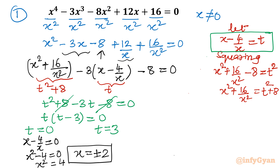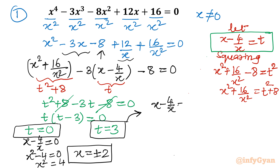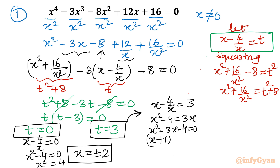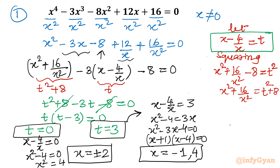From t equals 0 we get two solutions. Now solving t equals 3: substituting x minus 4 over x equals 3 and multiplying by x gives x squared minus 4 equals 3x, so x squared minus 3x minus 4 equals 0. Factorizing: (x plus 1)(x minus 4) equals 0, giving x equals negative 1 and x equals 4. So the final solution set for Method 1 is x equals plus or minus 2, negative 1, and 4.